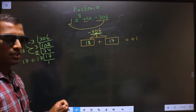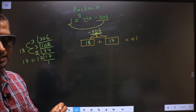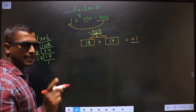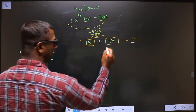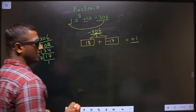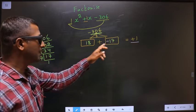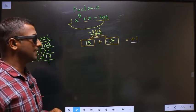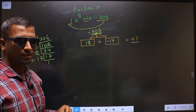Now you have to adjust the signs. Here I should get +1, which could only happen if I put negative before 17. 18 - 17 = +1, and 18 × (-17) = -306.